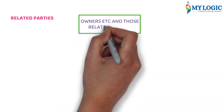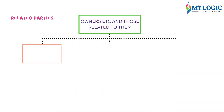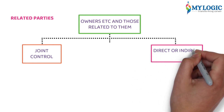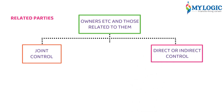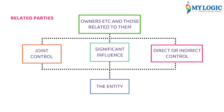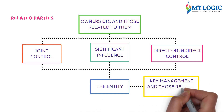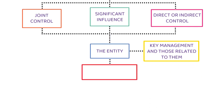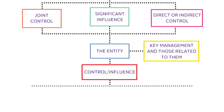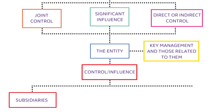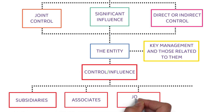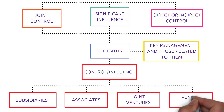Related parties include: owners and those related to them; entities under joint control; entities under direct or indirect control; entities under significant influence; the entity itself; key management and those related to them; entities under control or influence such as subsidiaries, associates, joint ventures, and pension schemes.